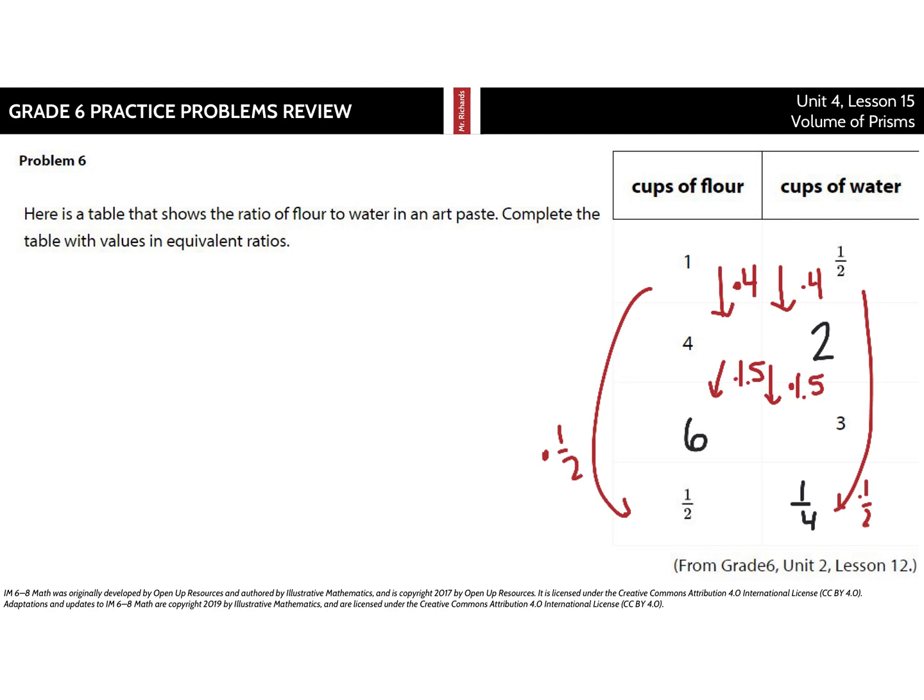And the last question brings us back to the table, but of course we have fractions. Here's the table that shows the ratio of flour to water in an art paste to complete the table with values and equivalent ratios. And so, as we go from one down to four, we're multiplying by four, so take a half times four is two. I'm looking and going, okay, how do I get from two to three? Well, I multiply by one and a half. And so four times one and a half is six. The other way looking at this now, you could have also gone, well, a half times six is three, so one times six is six. And then, as I'm looking to get to a half now, I'm coming back up at this one, going, okay, one times a half is a half. A half times a half is a fourth.